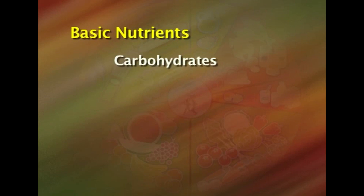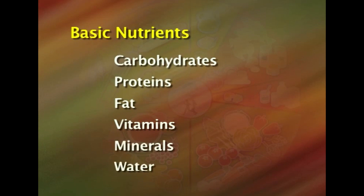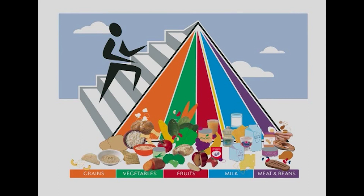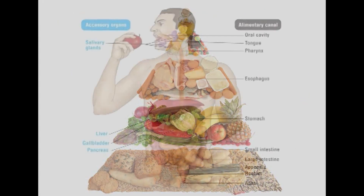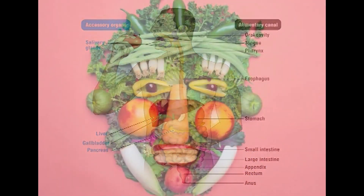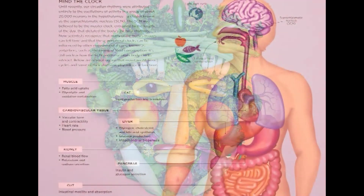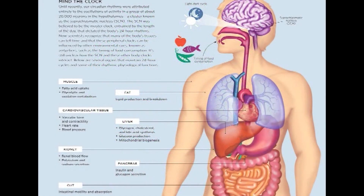There are six basic nutrients that we need to eat in our diet: carbohydrates, proteins, fat, vitamins, minerals, and water. Basically, nutrition is a science of food and the other substances therein — their action, interaction, and balance in relationship to health and disease — and the processes by which the organism ingests, absorbs, transports, and utilizes various nutrients and disposes of their end products.